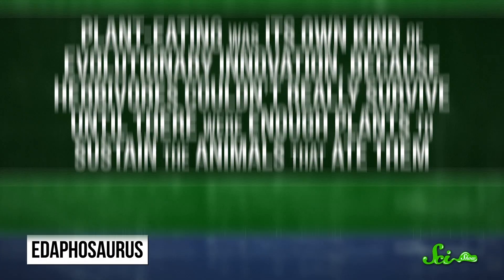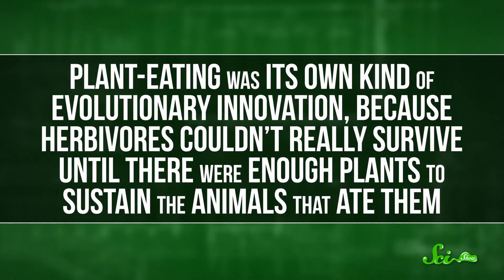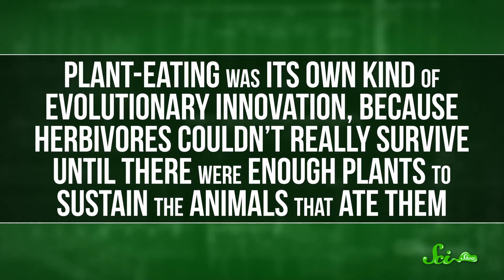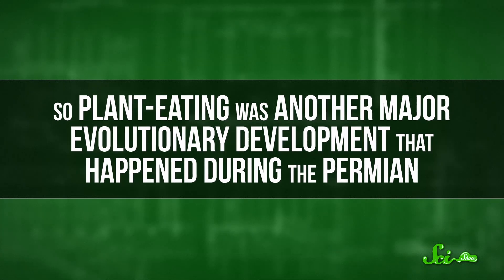Plant eating was its own kind of evolutionary innovation, because herbivores couldn't really survive until there were enough plants to sustain the animals that ate them. Plus, herbivorous animals had to evolve digestive systems that could extract nutrients from leaves, which is much harder and less energy-efficient than getting all your calories from meat. So plant-eating was another major evolutionary development that happened during the Permian.